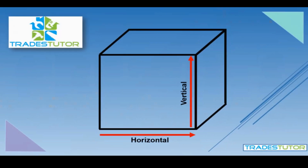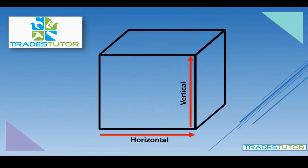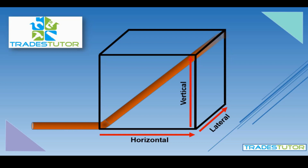Welcome to another math video by Trades Tutor. Today we're going to look at the rolling offset. What that is, is when a pipe not only goes in a horizontal direction but also goes in a vertical direction, and then we throw in a third direction — it moves laterally. So the idea is if you're putting in a piece of pipe, it goes from one side of the room to the other and cuts through the room. This wouldn't happen in a room, but it would happen in a tight space.